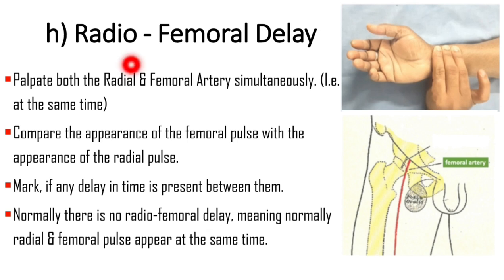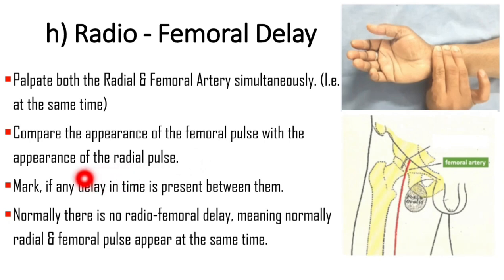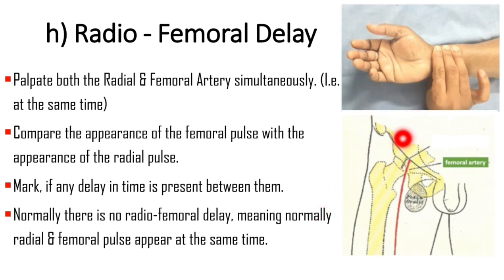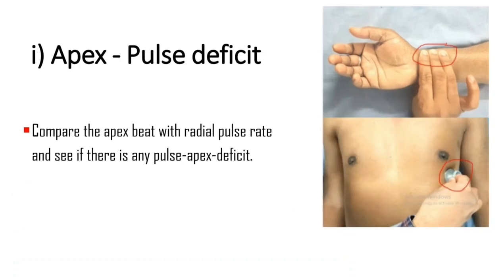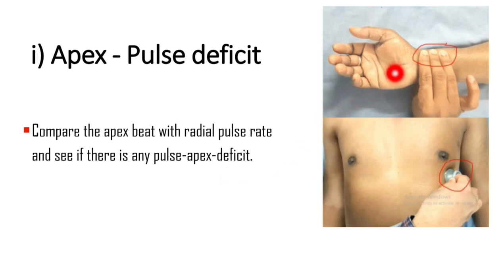Another parameter is radial-femoral delay. Palpate both the radial and femoral artery simultaneously — that is, at the same time. Compare the appearance of the femoral pulse with the appearance of the radial pulse, and note if any delay in time is present between them. Normally, the radial and femoral pulse appear at the same time. The next parameter is apex-pulse deficit. Compare the apex rate with the radial pulse rate and see if there is any apex-pulse deficit.